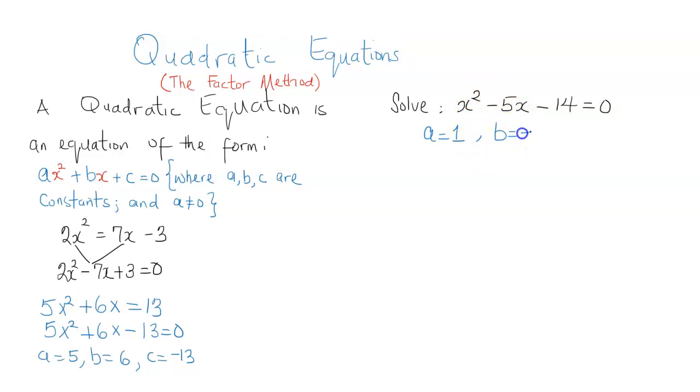b is going to be negative 5. That's the coefficient of x. And c is the constant, the number without any x beside it. That's negative 14.